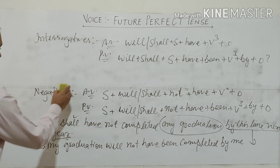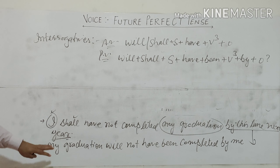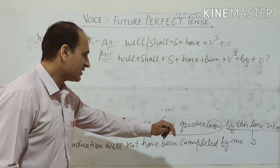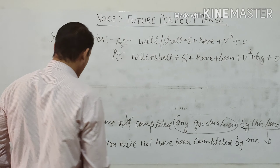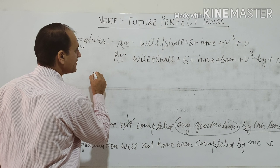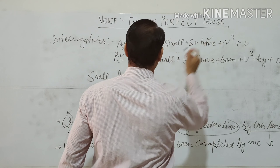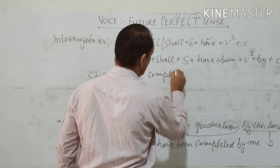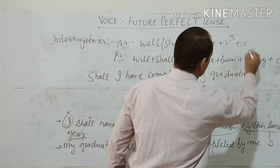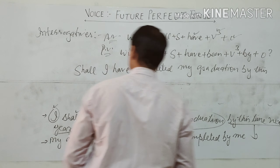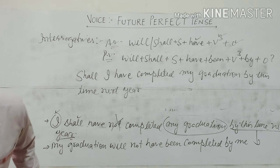Now let's change the sentence into interrogative. First active voice, then we'll change it into passive. Our sentence is: I shall have completed my graduation by this time next year. To make it interrogative, we switch the places of the helping word and subject. It becomes: Shall I have completed my graduation by this time next year?